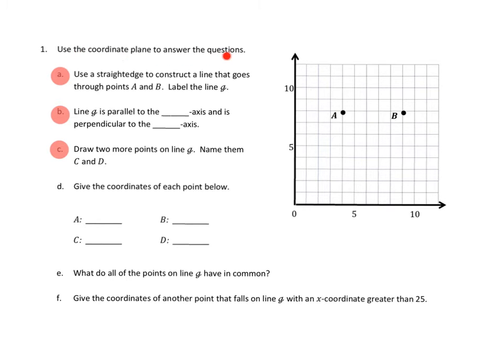Let's take a look at problem number 1. We're going to use the coordinate plane to answer these questions. Part A: Use a straight edge to construct a line that goes through points A and B. Label that line G. So we have to create a line that goes through A and B and we have to label it line G. I'm going to go ahead and grab my line tool for a second. I'm going to go ahead and make my line, then I have to make and move my line.